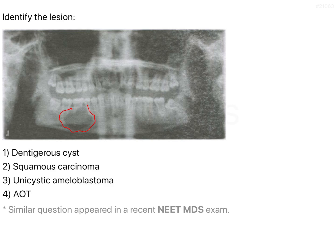It has also caused displacement of the mandibular second premolar. If you can look at the image, it has a distinct outline, and there is no haziness or radio opacity within the radiolucent lesion. So this is basically a unilocular lesion and not a multilocular lesion.